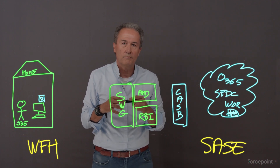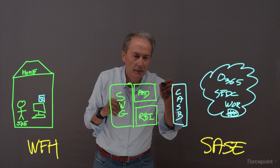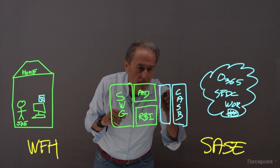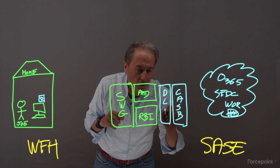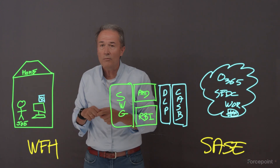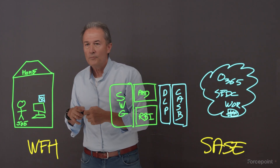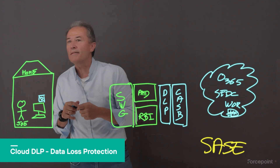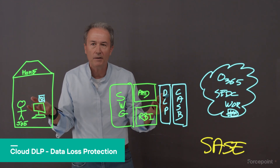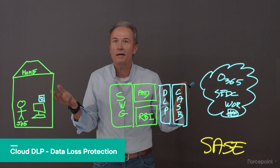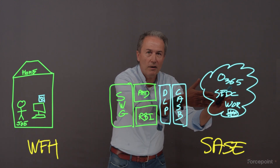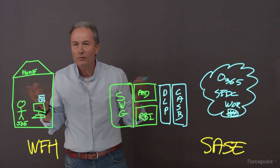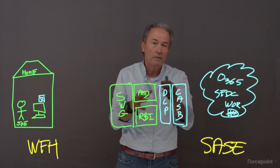So what else do we need? DLP — but we need DLP in the cloud. We need cloud DLP to look at the data and see whether it's appropriate to be at Joe's home. Imagine Joe is the head scientist of a big pharma company working on the COVID-19 vaccine. Would you want the secret formula of the vaccine to go to Joe's home? No — you want to block that. DLP will do that.